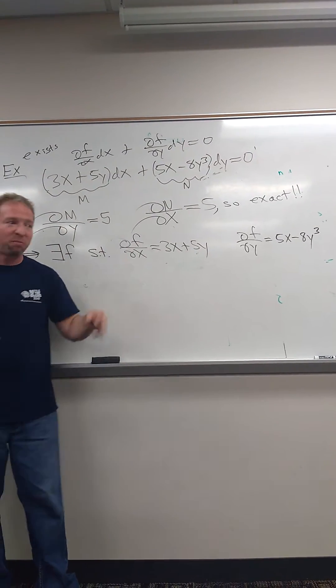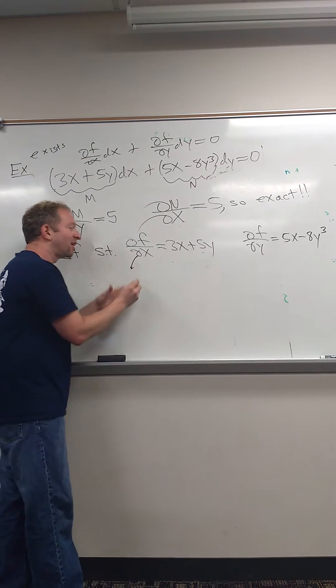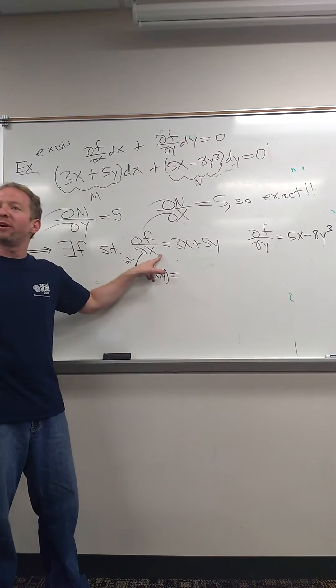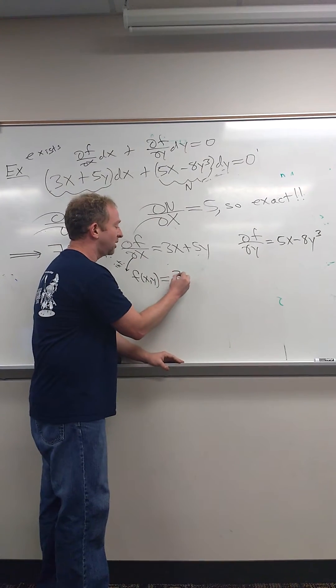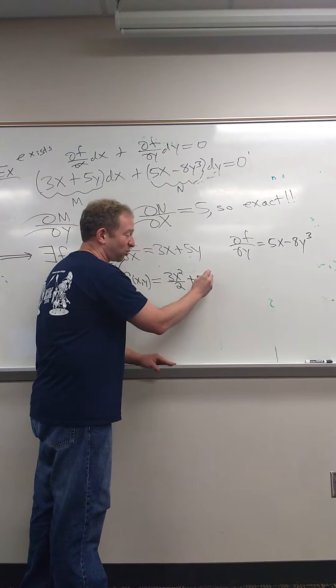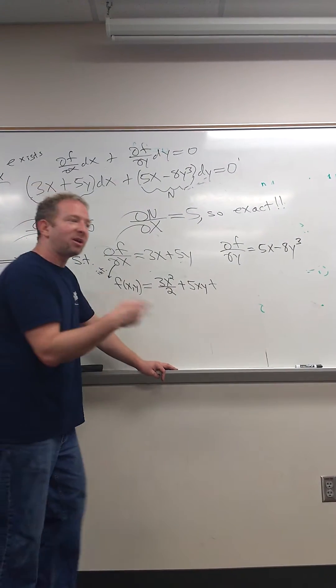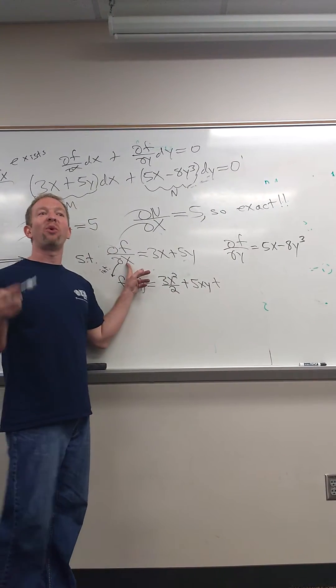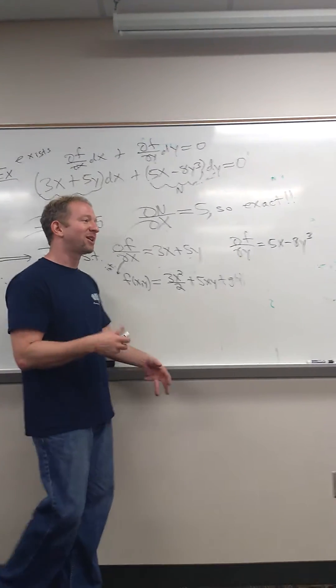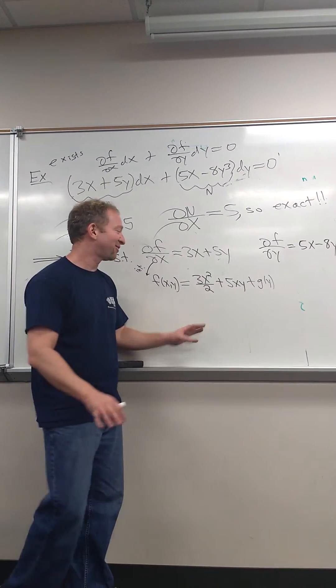Okay. So you pick one and you integrate. So pick whichever one you want. So I'm going to pick this one and integrate it. So integrate. So f of x, y. And we're integrating with respect to what variable? X. Yeah, x. So here it's going to be 3x squared over 2 plus 5xy. Plus, now in calculus 1, you add an unknown constant. But since we're integrating with respect to x, we have a partial derivative, we have to add an unknown function of y. So I'm going to call it little g of y.